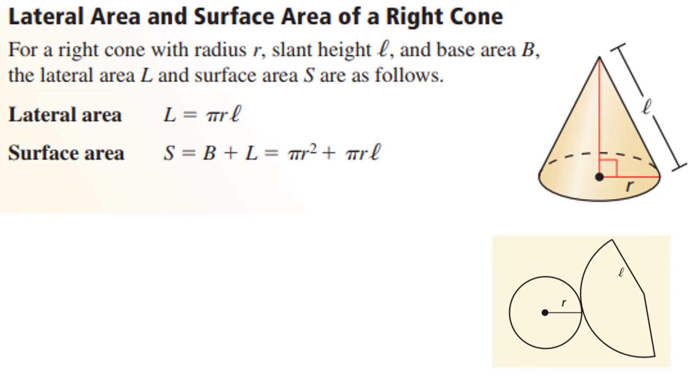Now let's find the surface area of a cone. If you'll notice, a cone has two parts to it. It has a circular base and then it has this sector of the circle that makes up the outside of the cone.